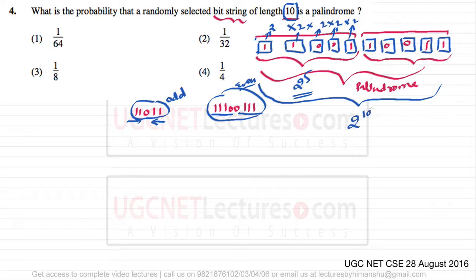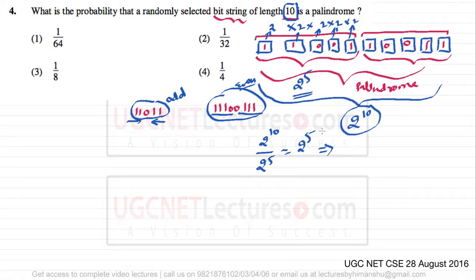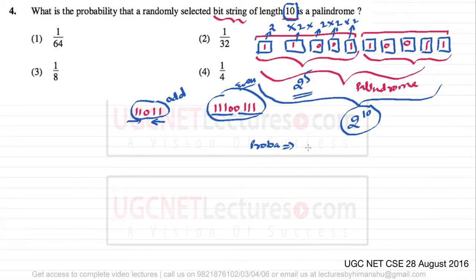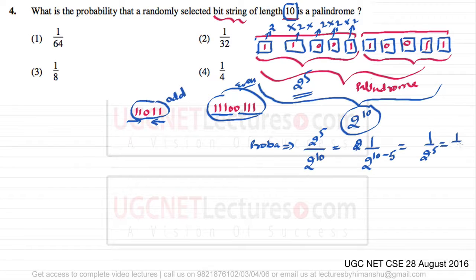In total, there are 2^10 bit strings of length 10. The probability of a randomly selected string being a palindrome is the number of favorable events divided by total events: 2^5 divided by 2^10, which equals 1 divided by 2^(10−5), which is 1 divided by 2^5, or 1/32.